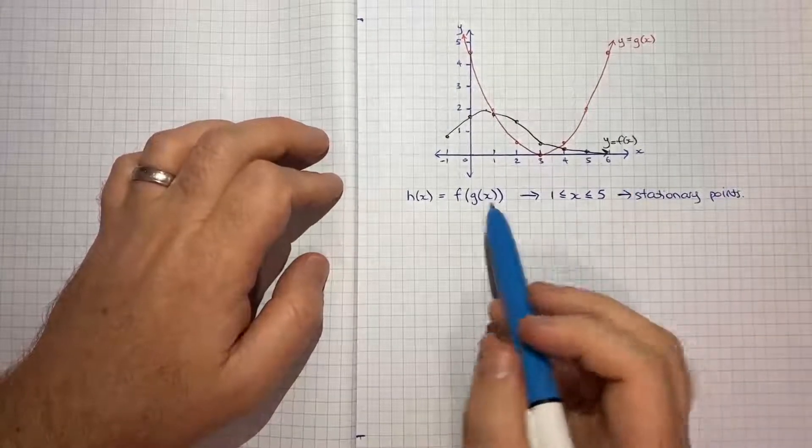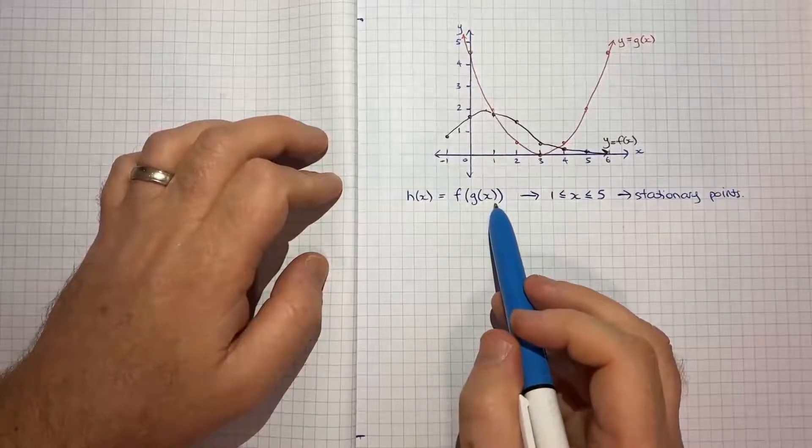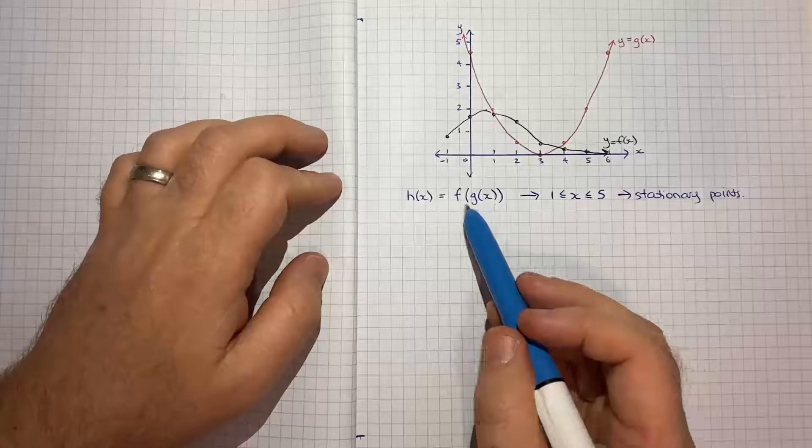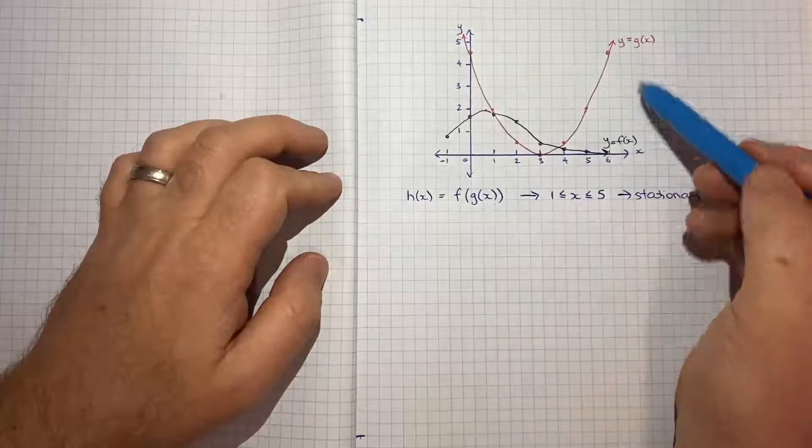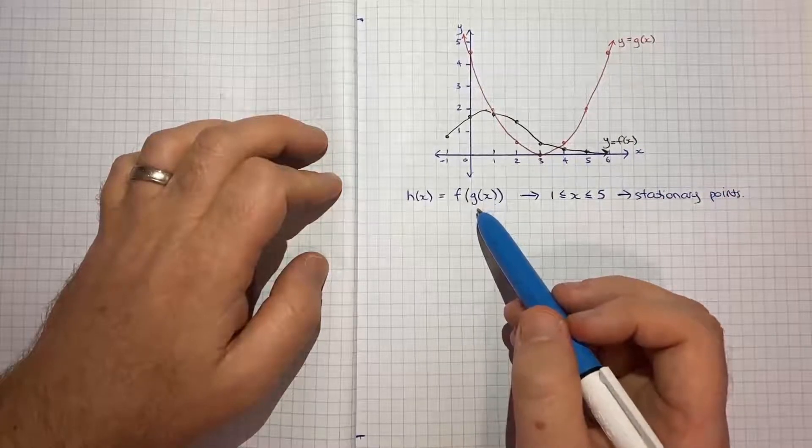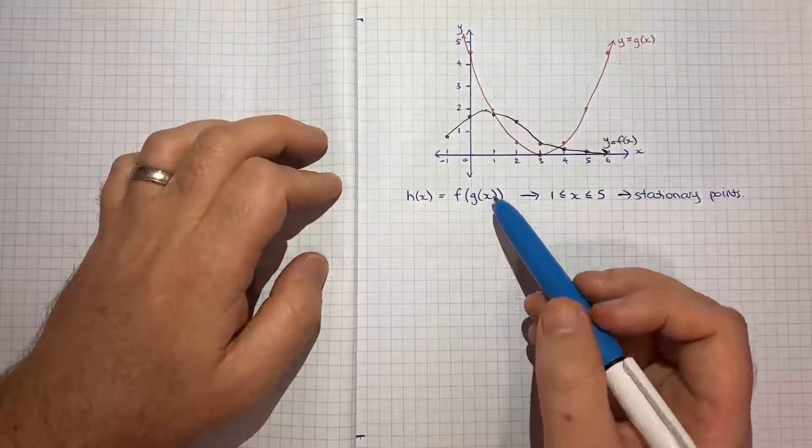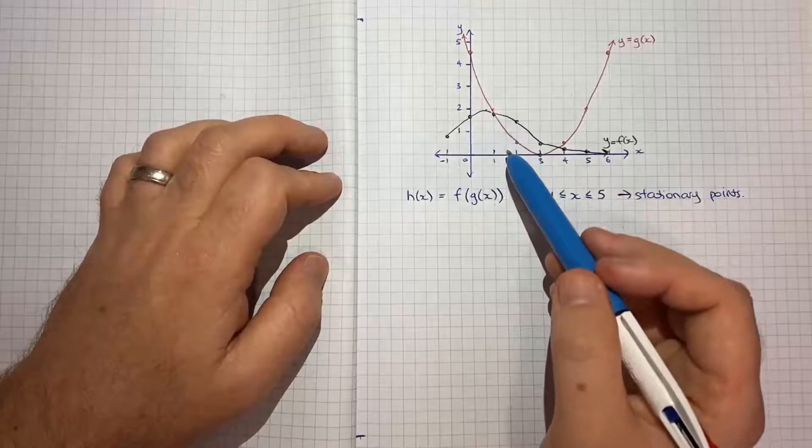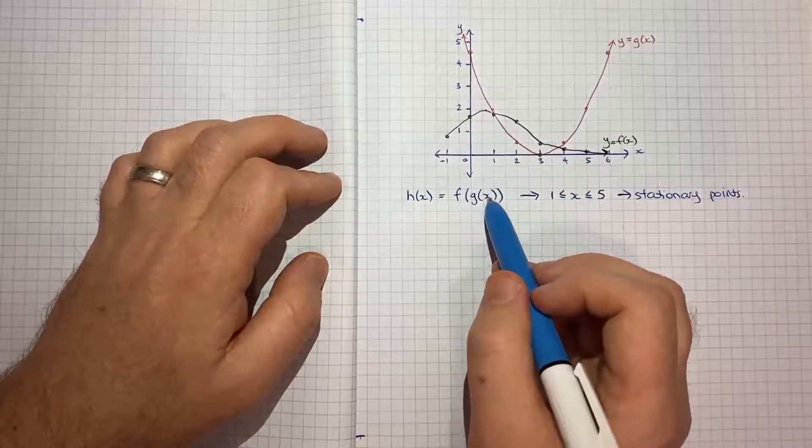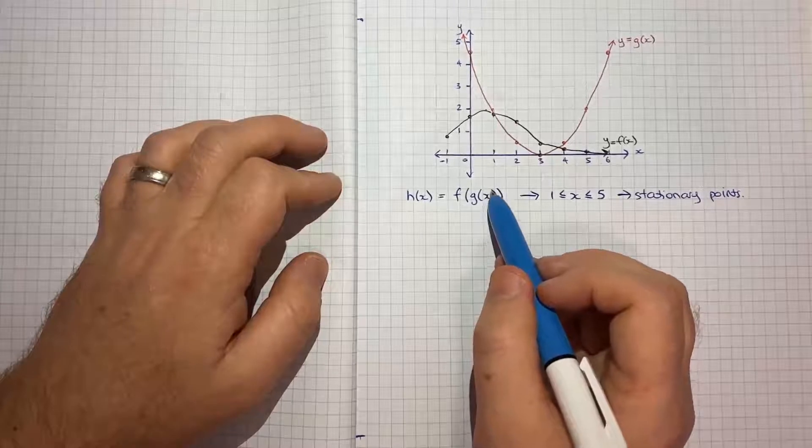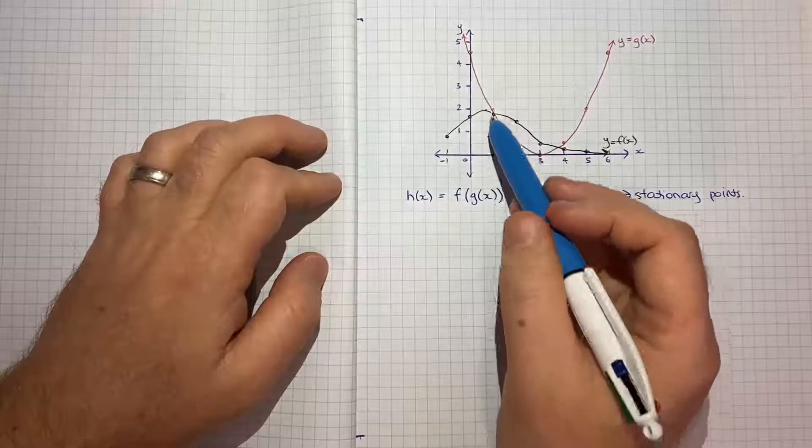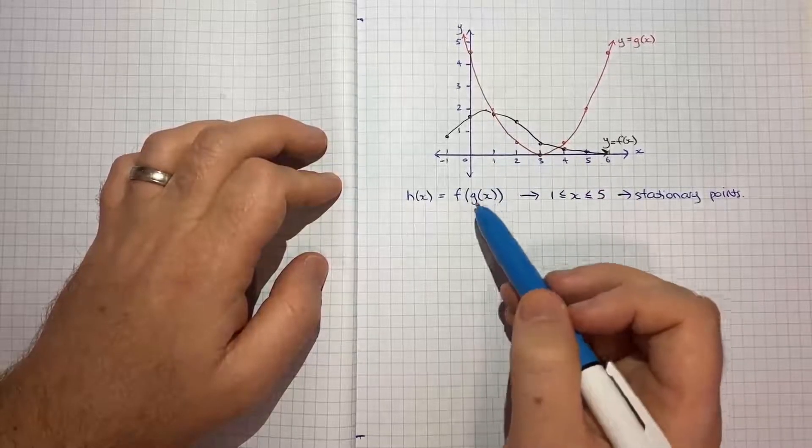Now for a question like this where we're dealing with composite functions, at first glance it can be seemingly daunting because we're not given the function so how can we work out the composite. And really the technique you need to use is to use the charts to kind of first work out g of x at a particular value of x and then take that g of x and see where f of x would fall at that value.